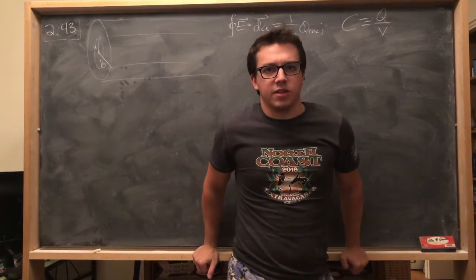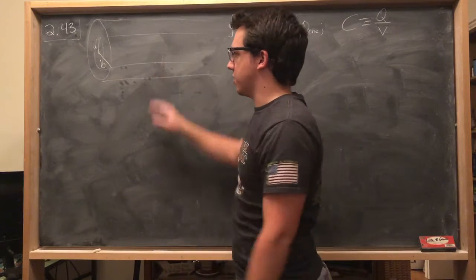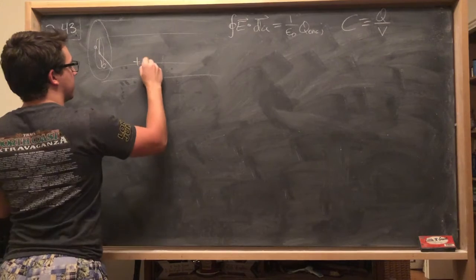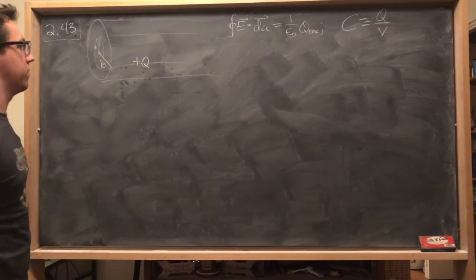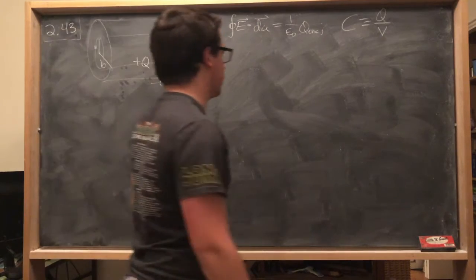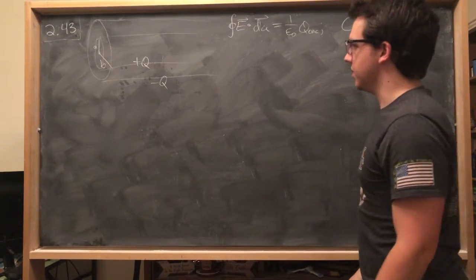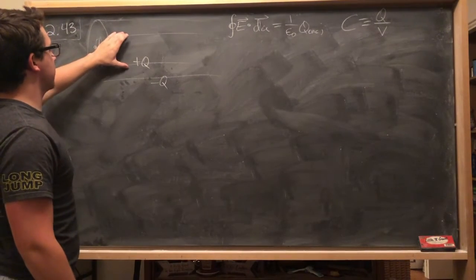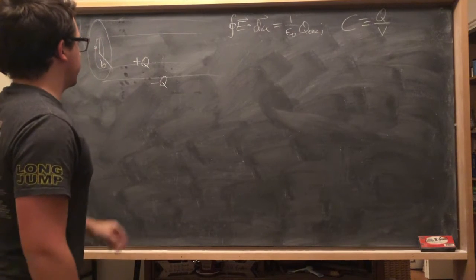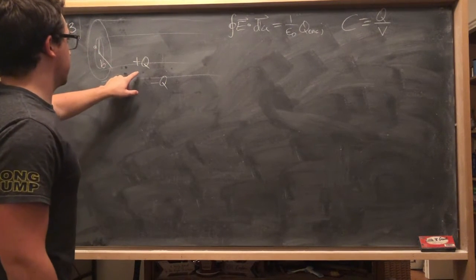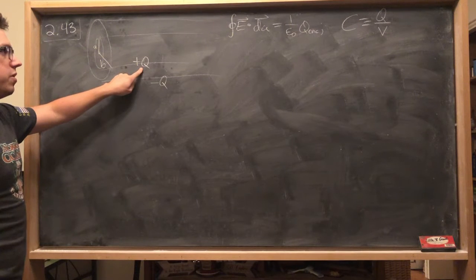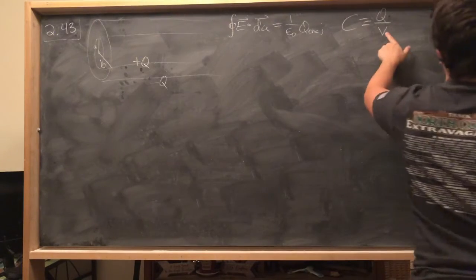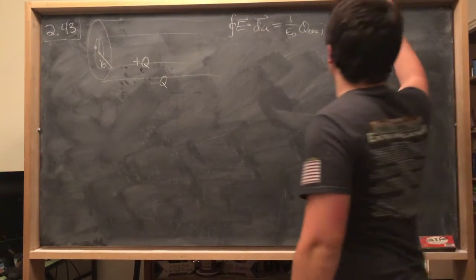And what is capacitance? Well, we can think that if we have two conductors like this, and we put a charge of plus Q on one of them and minus Q on the other, then they'll have some potential difference between the two surfaces. And the potential difference should be proportional to whatever charge we put on them. And that constant of proportionality between the charge that we put on them and the potential difference is known as the capacitance.